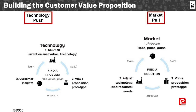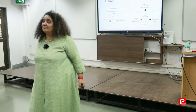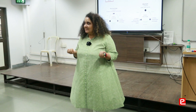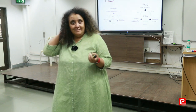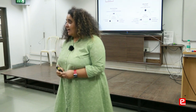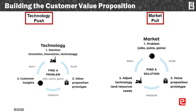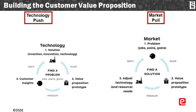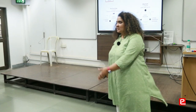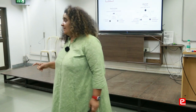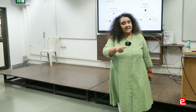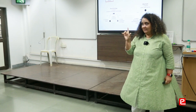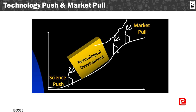You can create an opportunity where you have a solution first and then go find a customer, or you start with a problem statement first and then create a solution. Take Velcro — it was developed as part of space technology to solve the problem of buttons and hooks in zero gravity. Then that technology had to go find other uses, and it found so many: it's in your chappals, watches, everywhere. It doesn't matter whether you start with the solution or the problem — the key is to match the solution with a problem for a customer.